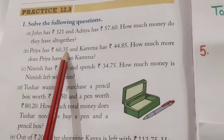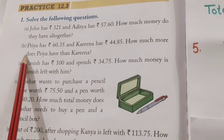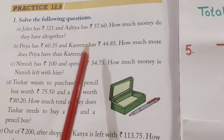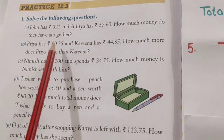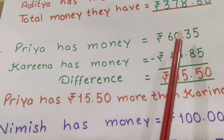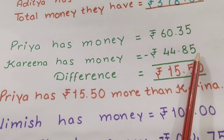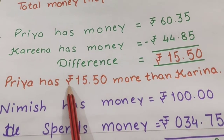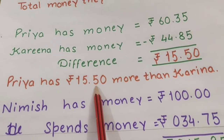Next sum. Priya has rupees this much. Kareena has rupees this much. How much more does Priya have than Kareena? We have to see how much more Priya has compared to Kareena. So, when this type of statement comes, we have to find the difference. Difference means subtraction — minus. Priya has money rupees 60.35. Kareena has money rupees 44.85. So, we will find the difference by subtraction. Then we will write: Priya has rupees 15.50 more than Kareena.